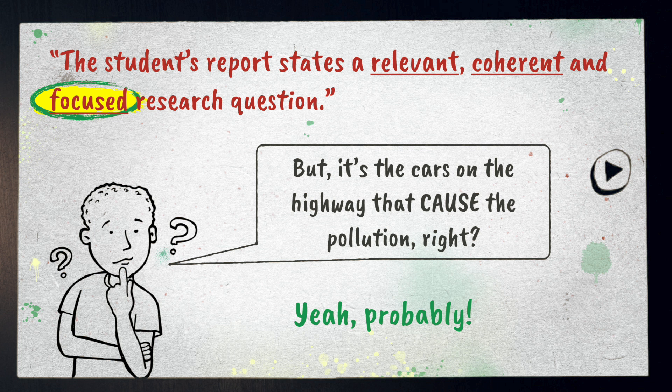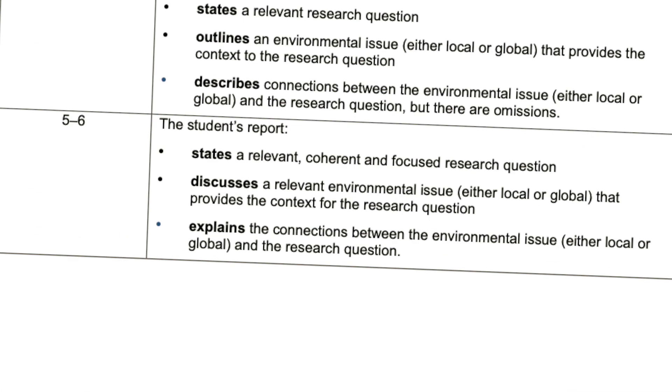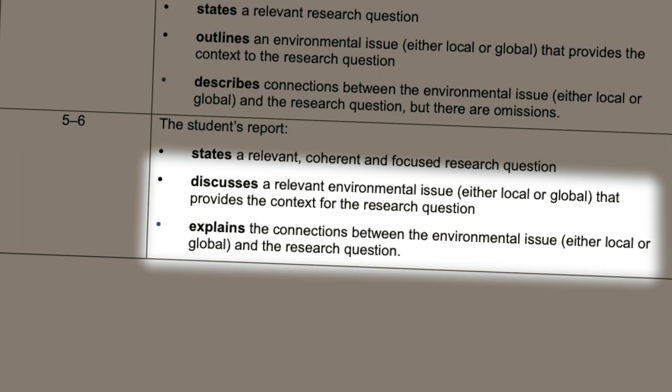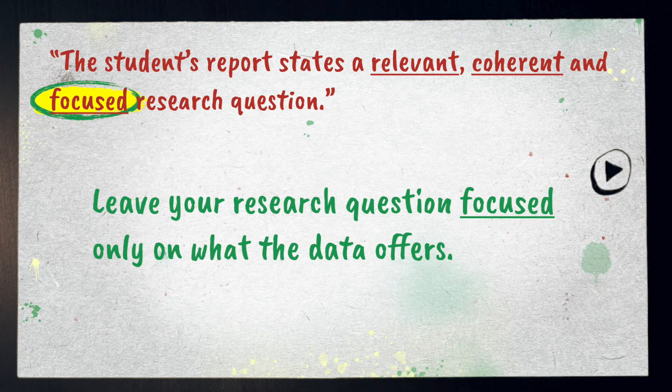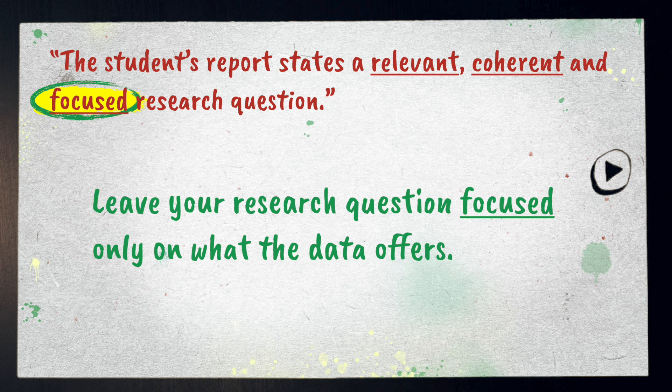If you want to discuss a causal relationship, and you often will, you can. Part of the identifying the context criteria requires you to discuss the relevant environmental issue and explain the connections between the environmental issue and the research question. So you can present that argument in your assignment, but leave your research question focused only on what the data offers.